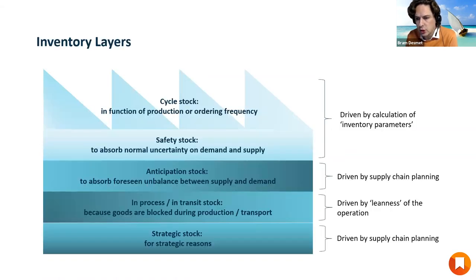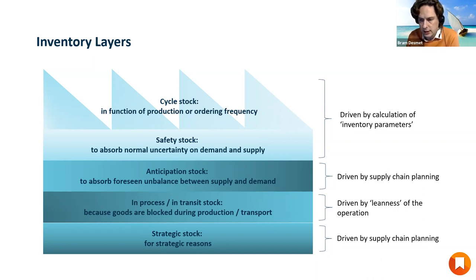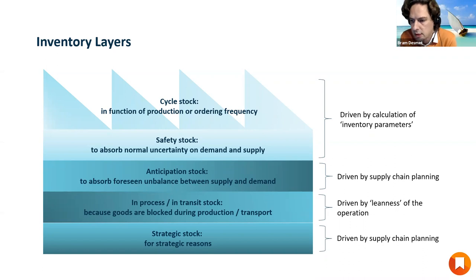Multi-echelon and some introduction. In general, if you look at inventory, there are different layers or different drivers of inventory. So there is the cycle stock. If I produce only once per month, that already creates two weeks of cycle stock on average. If I produce every week, that creates on average half a week of cycle stock. And that is different from the safety stock, which is the typical buffer against uncertainty — uncertainty on the demand side or uncertainty on the supply side — which is different from what I call anticipation stock.